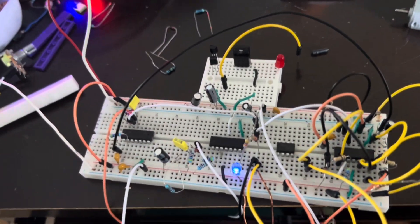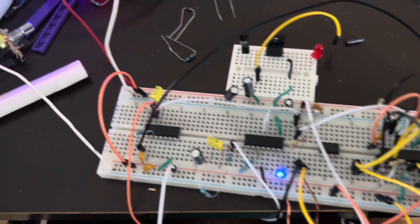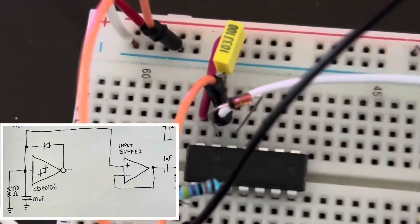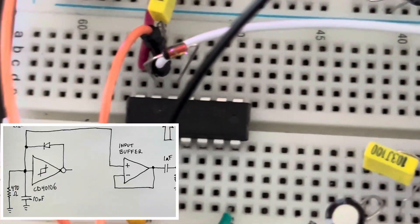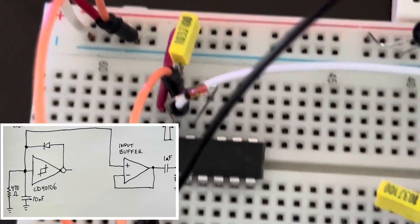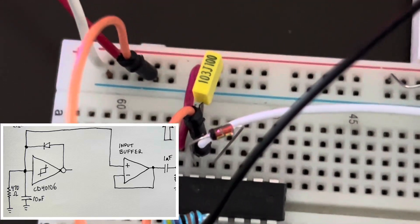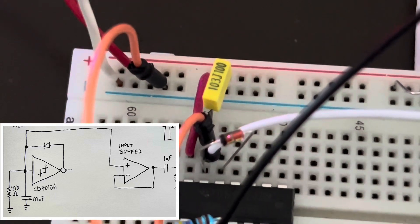So here is the PWM circuit. First I have this CD40106 oscillator. I have two of them actually. The first one is a sawtooth wave generator.